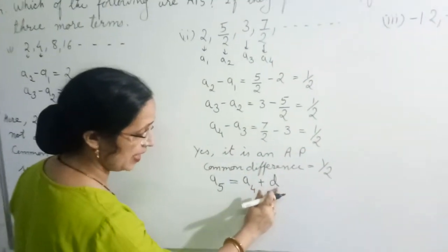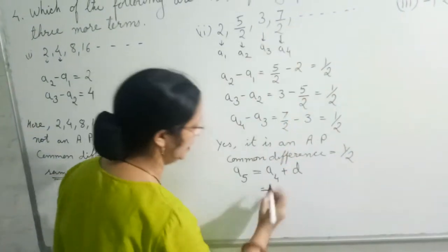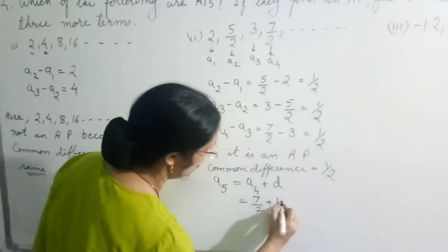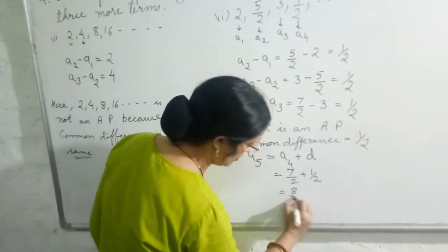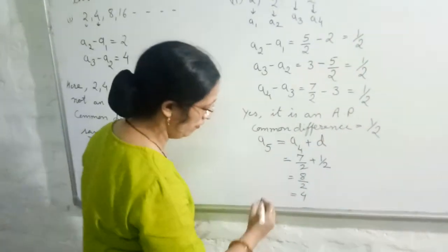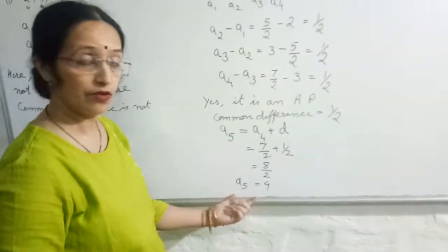A4 is 7 by 2. Plus difference is 1 by 2. Plus them to get 8 upon 2. Cancel it to come 4. So 5th term is 4.